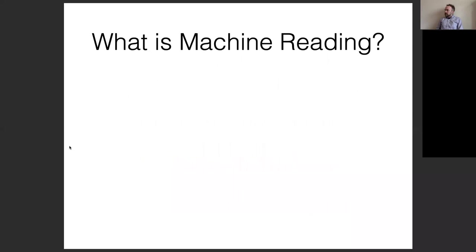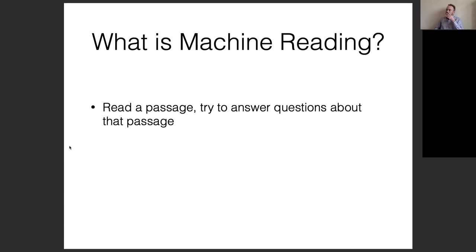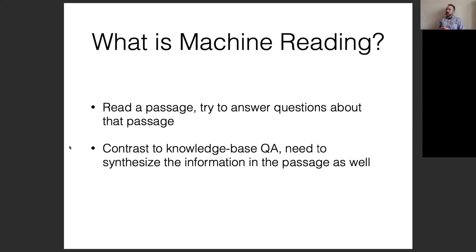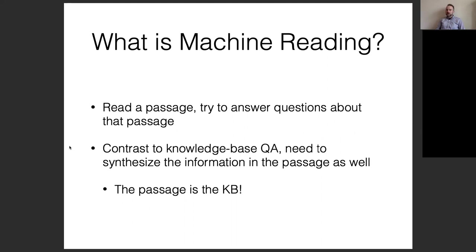What is machine reading? Machine reading is reading a passage and then trying to answer questions about that passage. We've talked about knowledge-based question answering, semantic parsing, and similar things where the source of information is a knowledge base. In contrast, with machine reading you need to synthesize the information in the passage itself — the passage is the knowledge base. This is difficult because instead of executing a structured query like SQL or SPARQL, you need to directly extract information from an unstructured source.